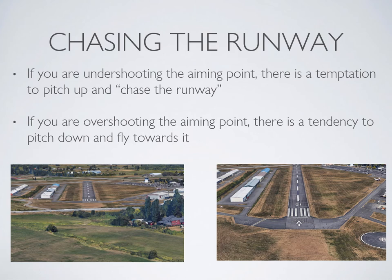Weird things can start to happen when your aiming point is not at the point of zero movement. If the runway looks like it's moving up and away from you, the temptation is to lift the nose — but this will only decrease your airspeed, bringing you closer to a stall. If the runway looks like it's going to run under you, the temptation is to lower the nose — but this only increases airspeed, which you'll need to bleed off in the flare. The proper reaction in both cases is to add or remove power, since power controls your rate of descent.